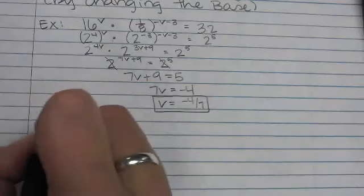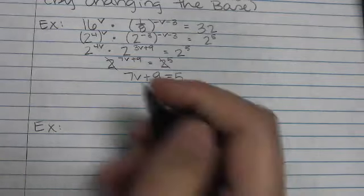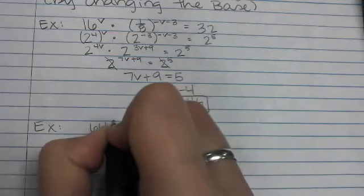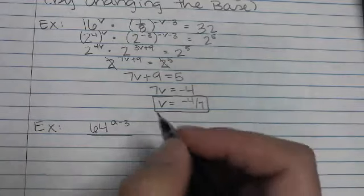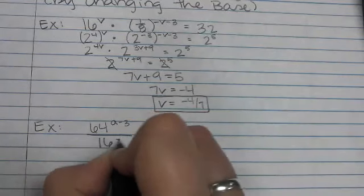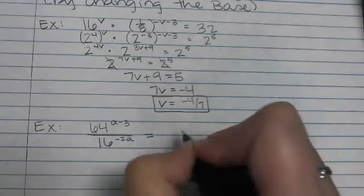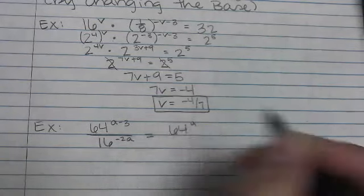Okay, and just one more example of this, since you guys should be pretty familiar with it. We're going to do 64 to the a minus 3 over 16 to the negative 2a equals 64 to the a.